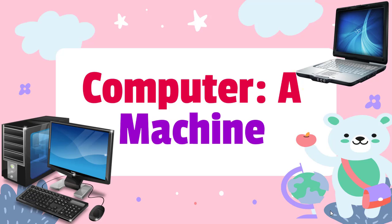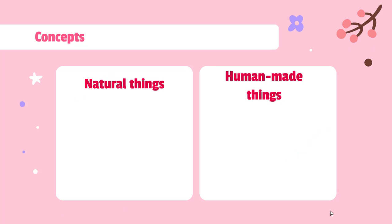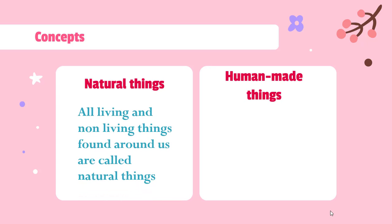The things that are surrounding us, they can be either natural things or human made things. Now firstly, let us see what are natural things. All the living and non-living things that are found around us are called as natural things.